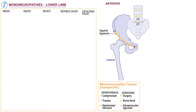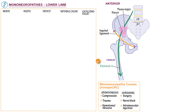First, within the iliac fossa, draw a portion of the iliacus muscle laterally and then draw psoas major medially — together they form iliopsoas. Show that the femoral nerve descends between the psoas and iliacus muscles, then underneath the inguinal ligament and down the anterior thigh to innervate the anterior compartment thigh muscles.